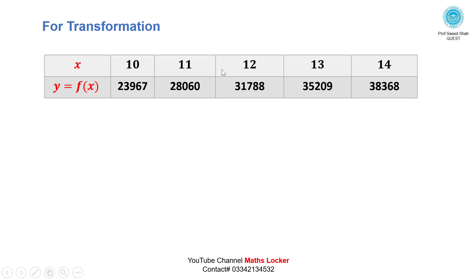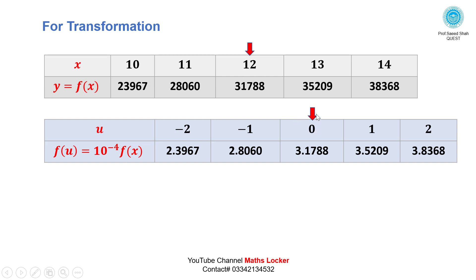The values of f(x) are very large, so we make a transformation for all values. Mark 12 as the center. Subtracting 12: 12-12=0, 13-12=1, 14-12=2, 11-12=-1, 10-12=-2. Placing the corresponding transformed f(u) values: 2.3967, 2.8060, 3.1788, 3.5209, 3.8368.